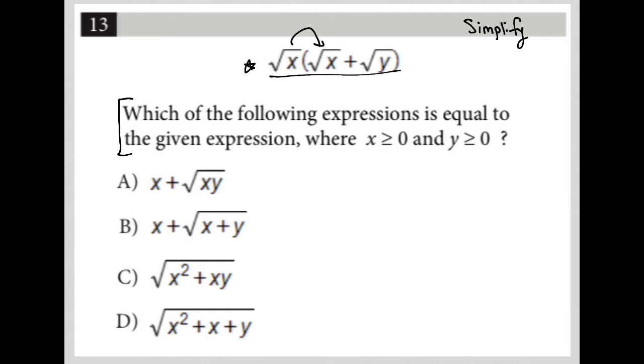I could definitely distribute this expression across. And let's just do that. So root x times square root x is just going to be x. And then square root x times square root y is going to be the square root of xy. And I do see that as an answer here for choice A.